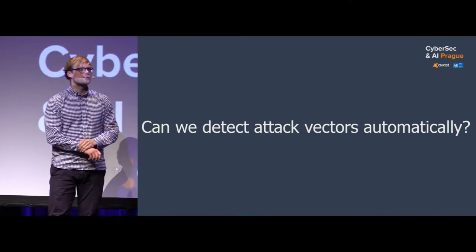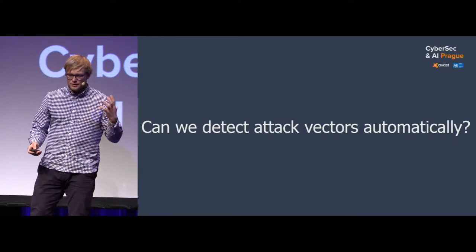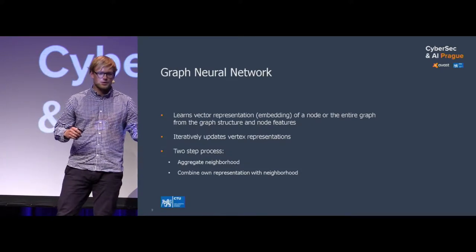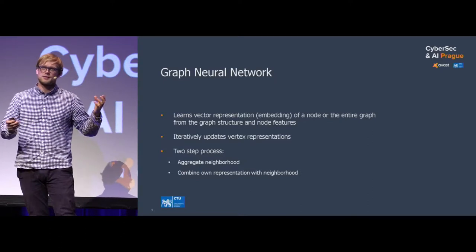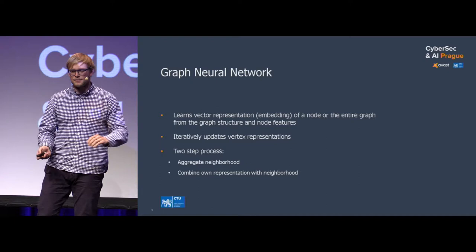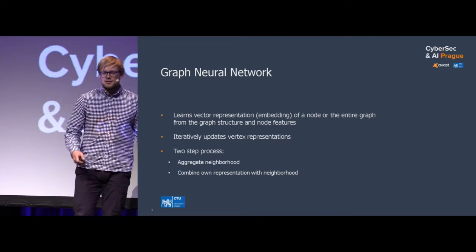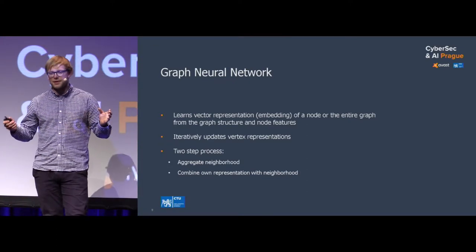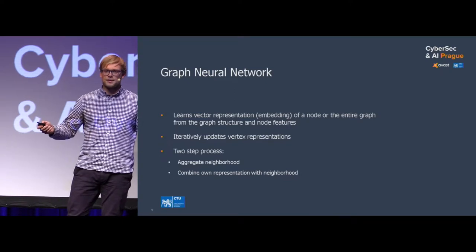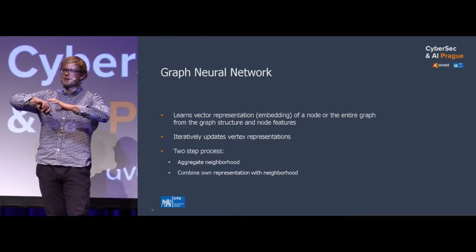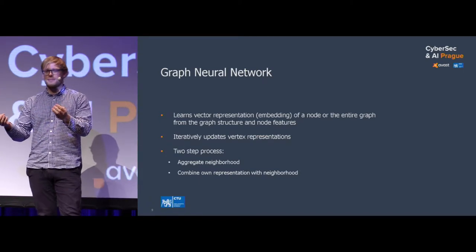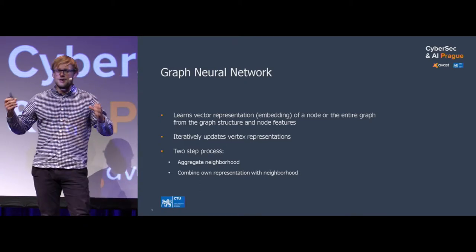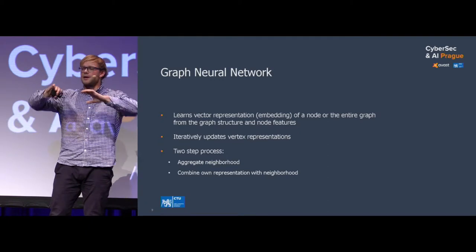So how do we approach this problem? The idea is: let's use a graph neural network, and then try to explain why it decided whether something is malware or not, and hopefully part of the explanation will be the attack vector. A graph neural network is a neural network that, in an iterative way, tries to learn vector representations or embeddings of particular nodes or the entire graph. It does that by first aggregating the neighborhood of each vertex, and then combining that information with its own representation.